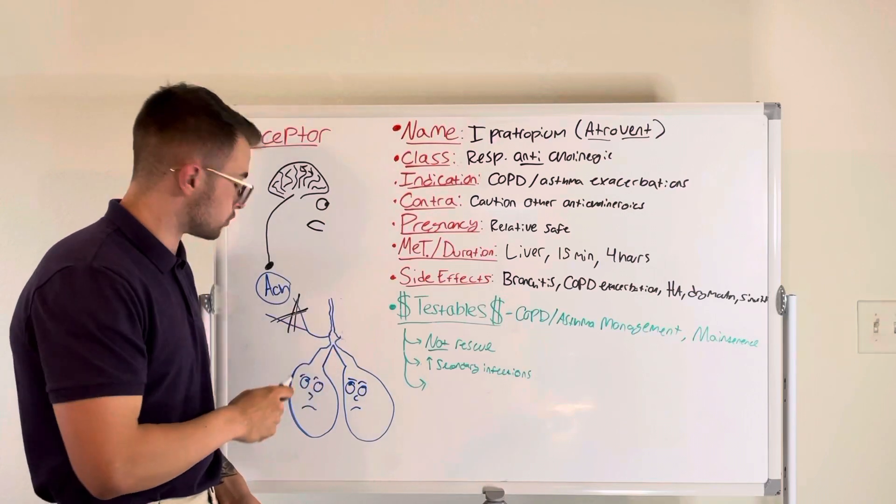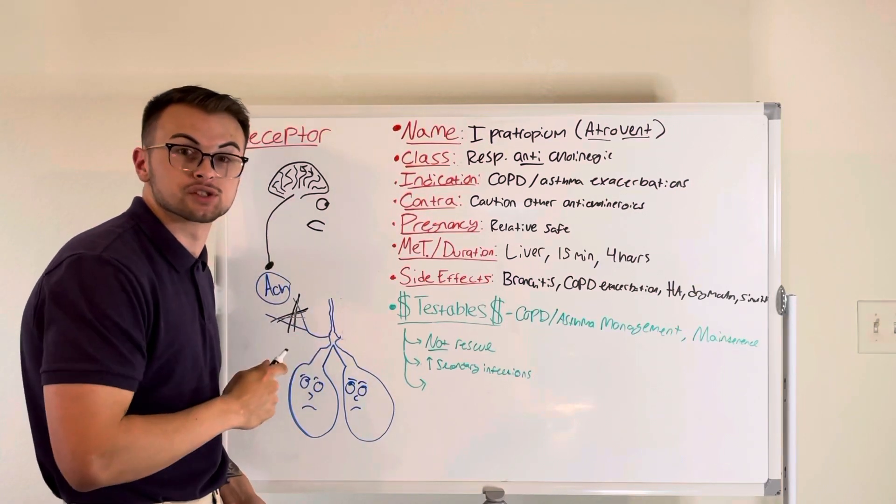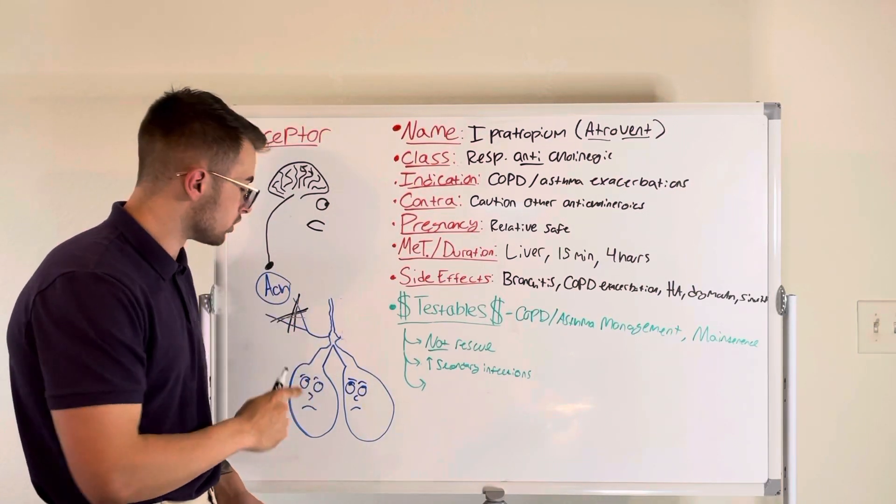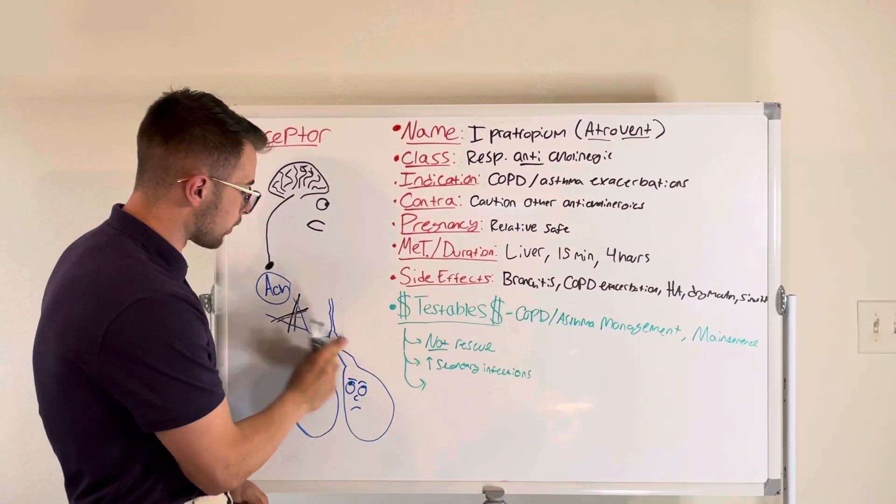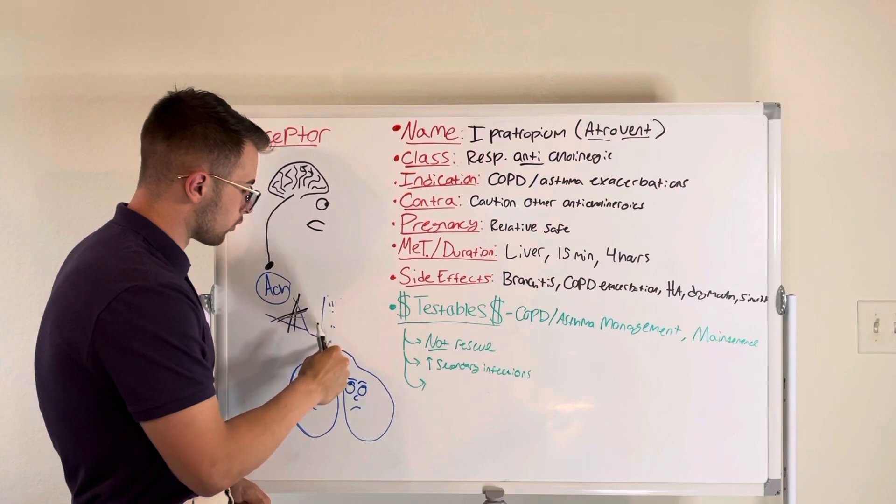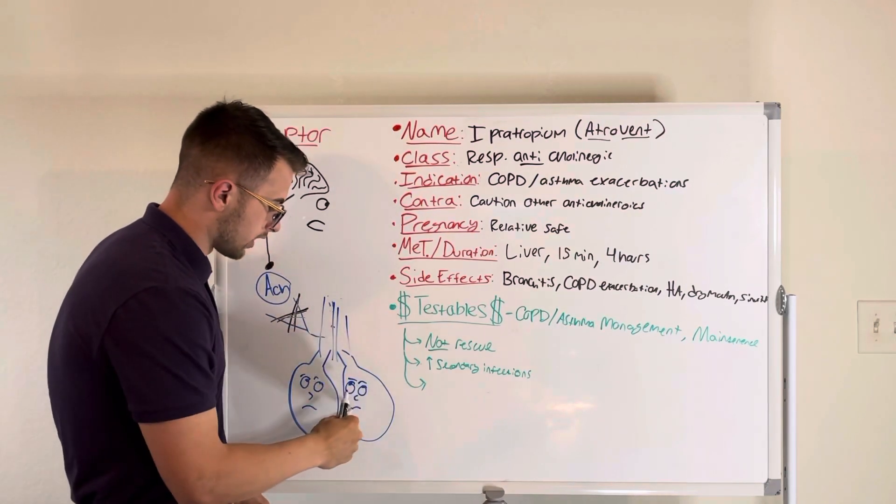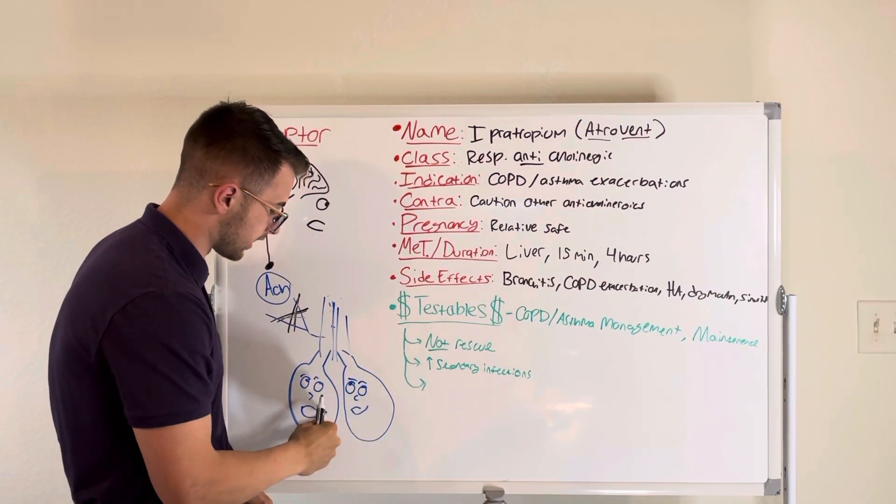However, Atrovent works to block these receptors so that smooth muscle does not constrict. Therefore, our airways will remain open and our lungs will remain happy.